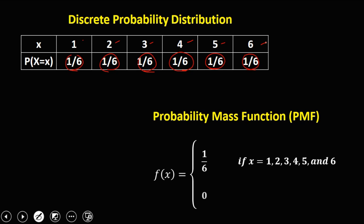Then 0 otherwise. So 'otherwise' means if the value of x is not one of these values, then the probability is equal to 0. For example, if x equals 7, there is no chance of getting 7, so the probability is 0. Similarly, if x equals 10, there is no chance of getting 10, so the probability is 0.